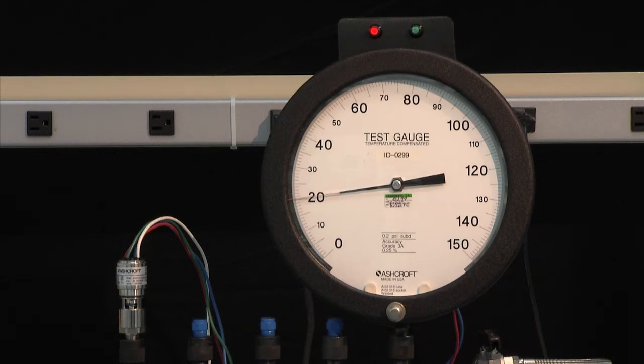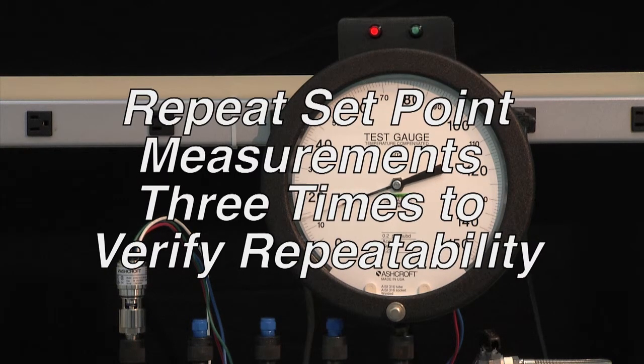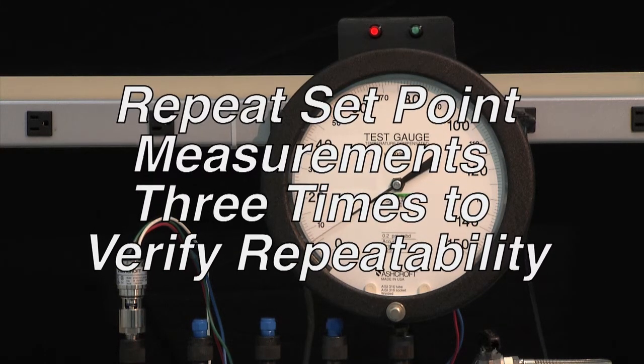Now we will increase the pressure until it changes back to green. And that gives us a dead band of approximately three. We will then take it back to zero and repeat the process to make sure that we have a consistent set point.